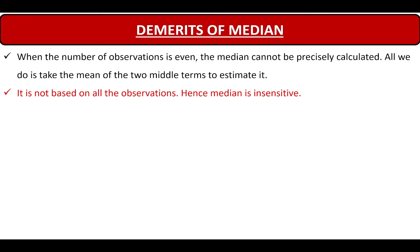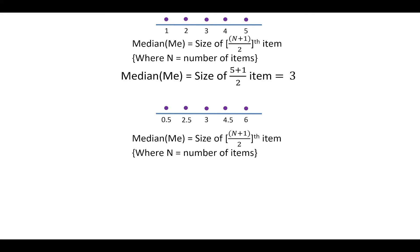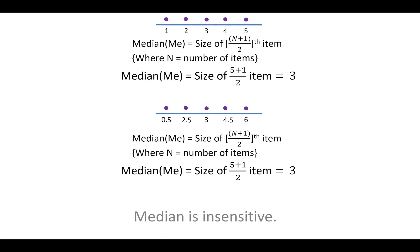Next, median is not based on all the observations. Hence, median is said to be insensitive. In the previous example, we had taken five items and calculated the median as 3. Now if we keep the items in ascending order but change the values of the first two and the last two items, the median is still the size of the (n+1)/2 th item — the third item — which remains 3. So by changing the first two and the last two values, the median is not affected. Hence, median is said to be insensitive.